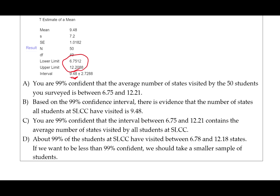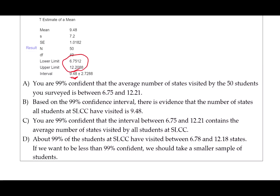Let's look at answer C. You are 99% confident that the interval between 6.75 and 12.21 contains the average number of states visited by all students at SLCC. This one is good. It talks about how confident we are that the interval, which is the correct interval, contains the parameter, which is the average number of states visited by all students at Salt Lake Community College. So that's our correct answer.